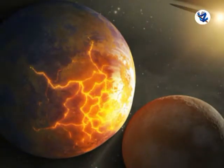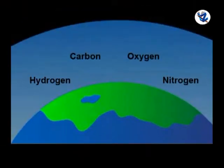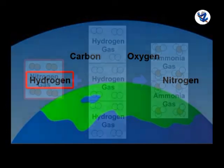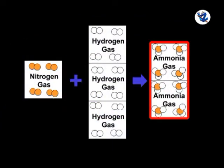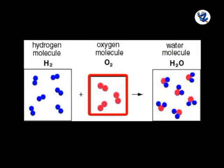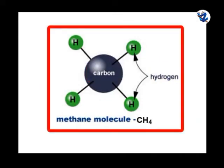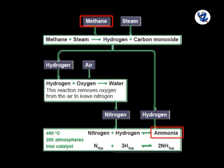The Earth was very hot initially and so the atoms could not combine with each other very easily. The primitive Earth contained a large amount of hydrogen, carbon, oxygen and nitrogen. Of these, hydrogen was very active and combined with nitrogen to form ammonia, with oxygen to form water and with carbon to form methane. As the temperature was high, ammonia and methane remained as gases and water as steam.